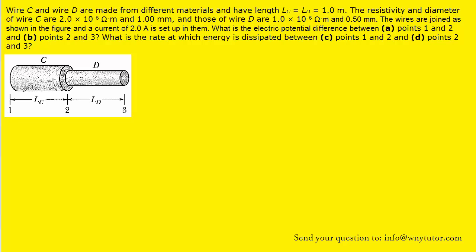So for part A, we're going to be focusing our attention on that particular wire. Now we know that the resistance of wire C would equal the resistivity of wire C multiplied by its length and then divided by the cross-sectional area of wire C.